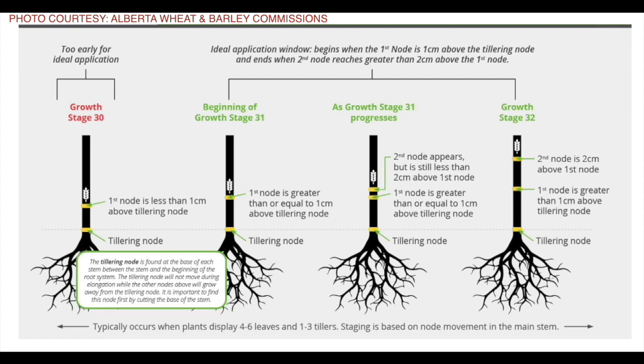Right now there are two plant growth regulators available for wheat in Alberta and Western Canada: Manipulator and MODIS. Manipulator, the gibberellin biosynthesis inhibitor, is staged for Zadoks growth stage 31–32. MODIS is staged for Zadoks growth stage 30–32, so a little bit wider. Growth stage 31–32 is sometimes referred to as first and second node, while growth stage 30–32 covers the beginning of stem elongation to second node. For anyone working on the BBCH scale, it's the same as the Zadoks scale — Zadoks 31–32 equals BBCH 31–32.